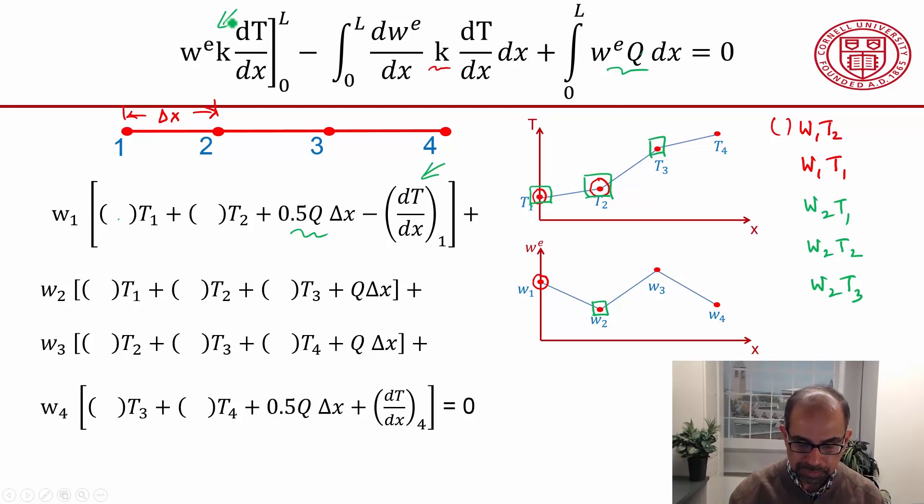Similarly for w2, you will get terms where it's multiplying t1, t2, t3. Then you will get a term from the heat generation term, which is called a source term. But you won't get anything from this gradient term. This gradient term at the boundaries will affect only the nodes at the boundaries, so since two is not at the boundaries, you don't get that term here. Similarly for w3 and w4 that's equal to zero.